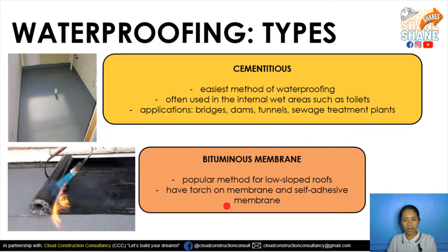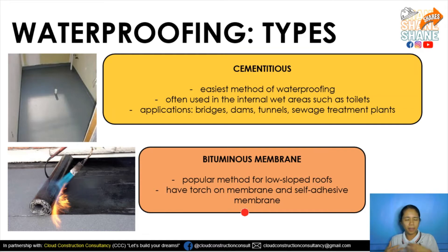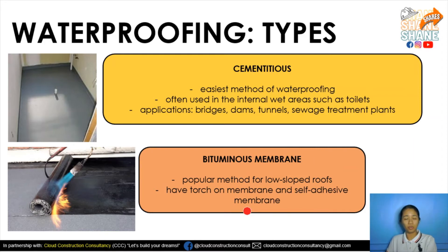For the bituminous membrane, it is a popular method for low-slope roofs. It comes as a torch-on membrane and self-adhesive membrane. It can also be used for toilets, but the methodology is more labor-intensive — you roll it out, apply a torch, the material melts and adheres to the structure. It is also risky because of the fire involved, but it is a good type of waterproofing.